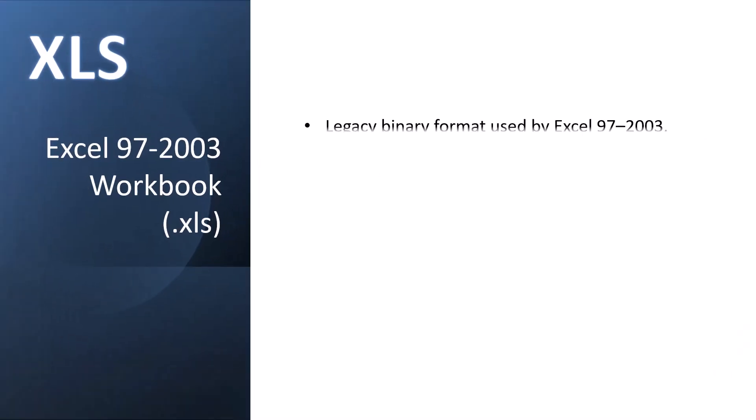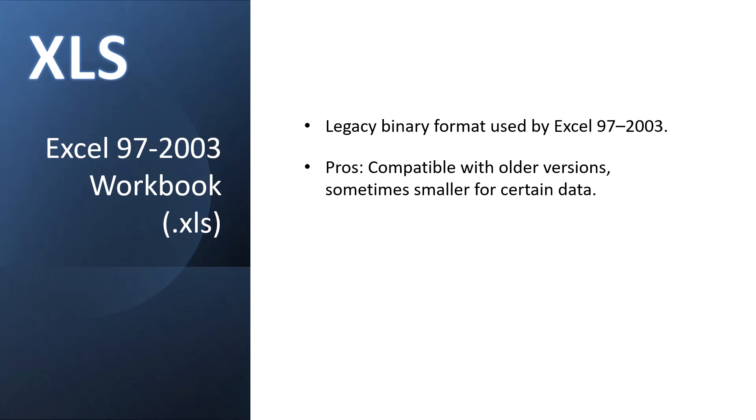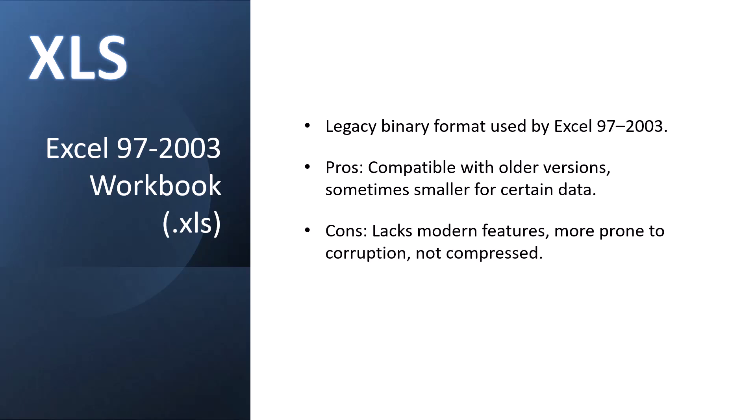The XLS file format is a legacy format used between Excel 97 and 2003. Data stored in this format is stored in a binary format, as opposed to a human-readable format. The pros are: it's compatible with older versions of Excel, and oftentimes smaller for certain datasets. The cons: they lack many of the modern features, they're more prone to corruption, and they're not compressed, so they occupy more space. These are best used for compatibility with older versions of Excel.